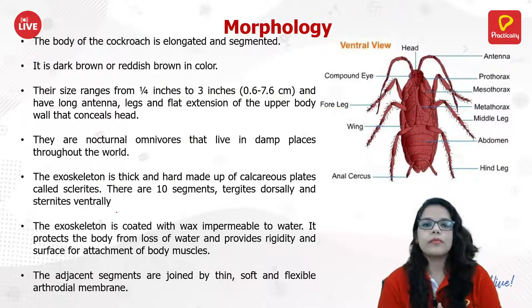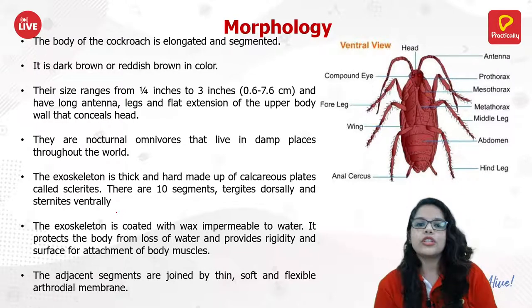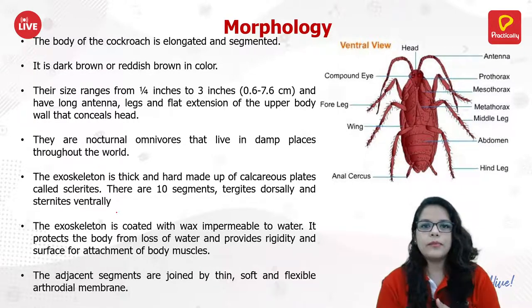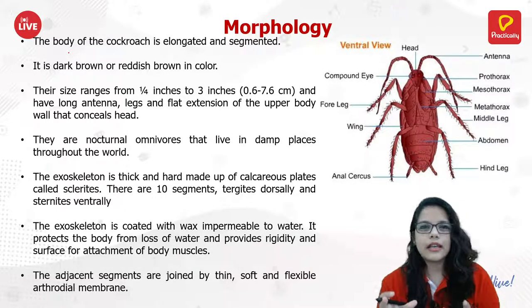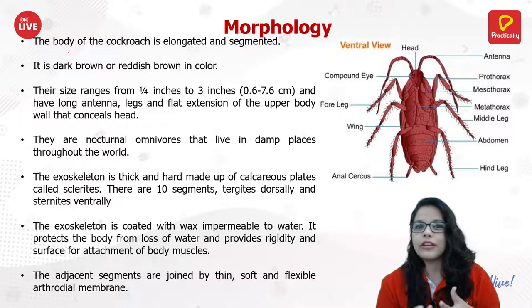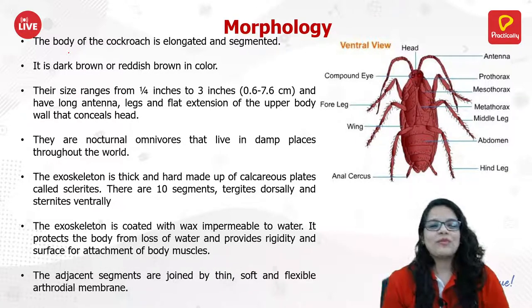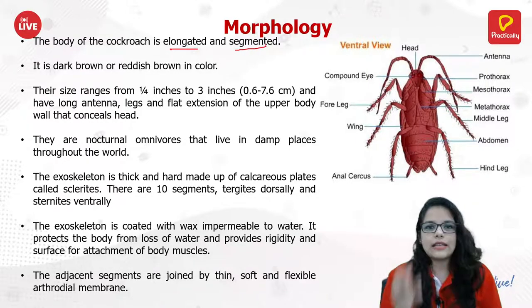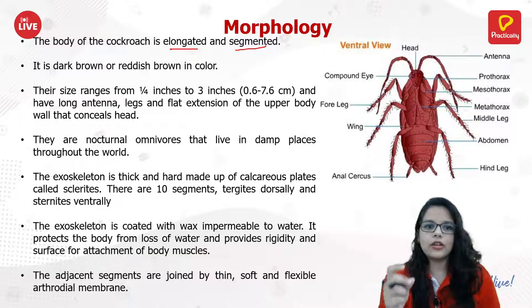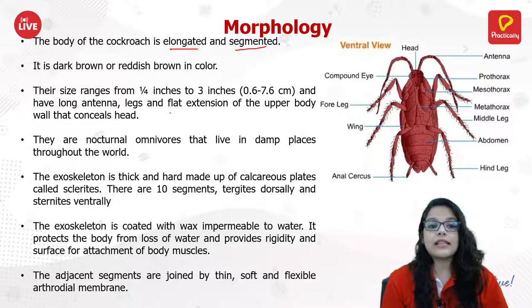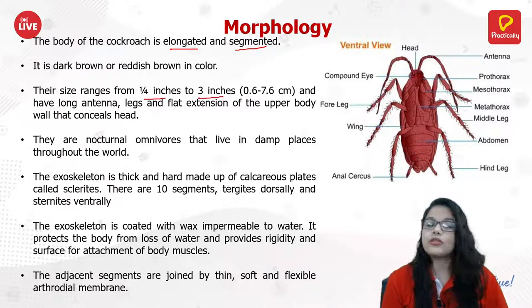We'll start with morphology first, then discuss anatomy. The body of cockroach is reddish brown in color, elongated and segmented — it has three segments. Their size ranges from one-fourth inch to three inches, so they can grow very big. They have long antennae, legs, and a flat extension of the upper body wall that conceals the head.